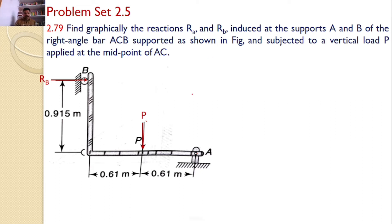Now, first I am extending the line of action of Rb and extending the line of action of P. These two are intersecting at this point. The third force, the reaction at A, must pass through this point. Hence, I can find the direction of the reaction at A. Let this angle be theta.